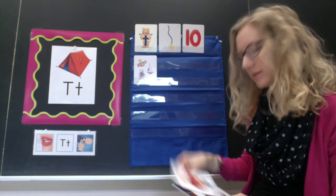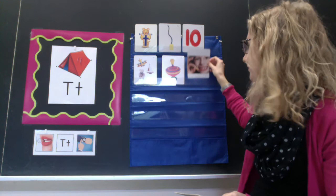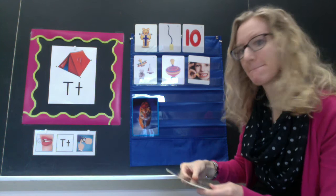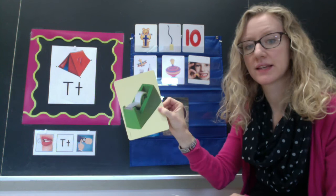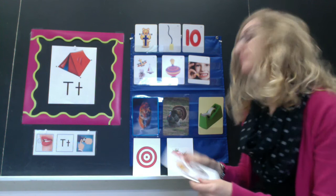A top is a toy that you can spin around and around and around. Tooth, tiger, turkey, tape, target, tomatoes, and toast.